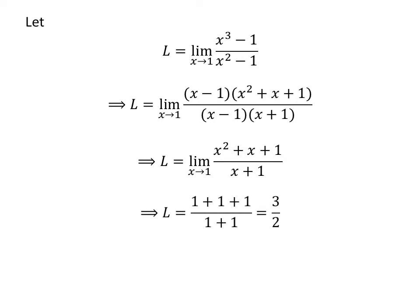As (x squared plus x plus 1) over (x plus 1) is a continuous function at point 1, we can plug in 1 for x. This leads us to L equals 3 over 2.